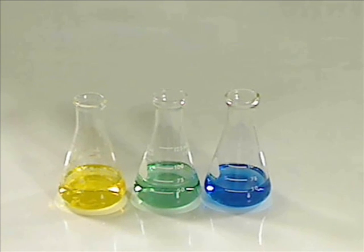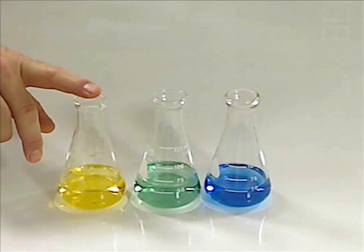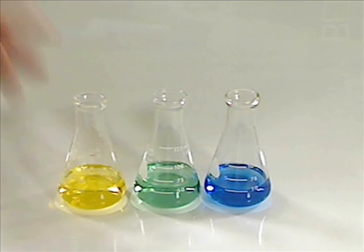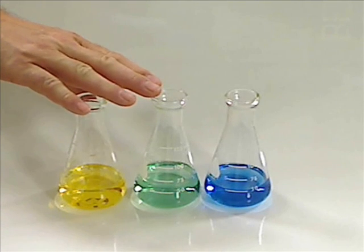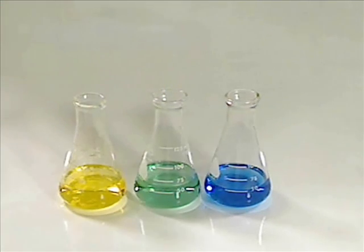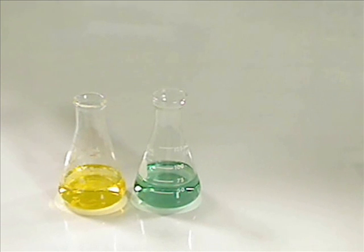And during a titration, if you have the acid in the Erlenmeyer flask and you're titrating with a base, you're going to start with a yellow and you want to go towards more of a green for the equivalence point. And let me demonstrate how that would work.